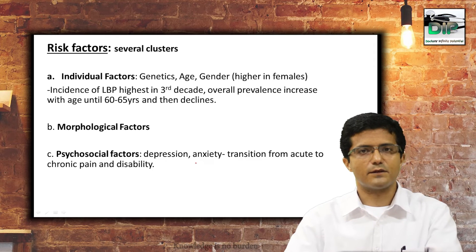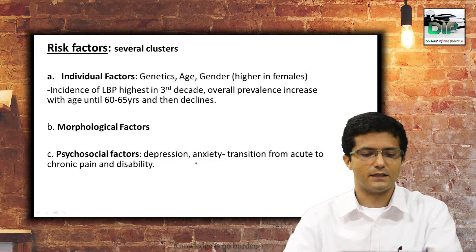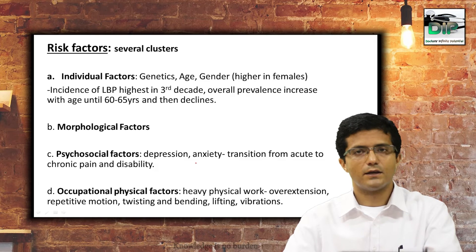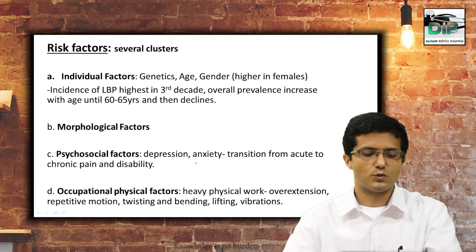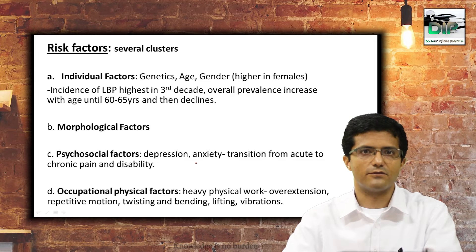Psychosocial factors are very important — especially depression and anxiety in chronic low back pain cases, which can lead to the transition from acute to chronic pain, causing prolonged disability. Occupational physical factors are also important risk factors: heavy physical work such as overextension, repetitive motion, twisting, bending, lifting, and vibratory work have been found to be associated with increased risk of low back pain.